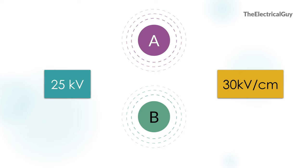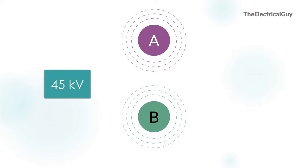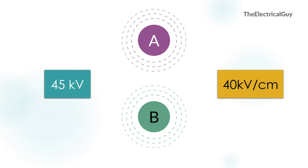But what will happen if we increase the voltage from 25kV to 45kV? The electric field intensity between the electrodes will increase — let's say it is now 40kV per centimeter. Now this is enough to break the insulation properties of air. The air will lose its insulation property, complete electrical breakdown occurs, and an arc will be struck between these two electrodes.